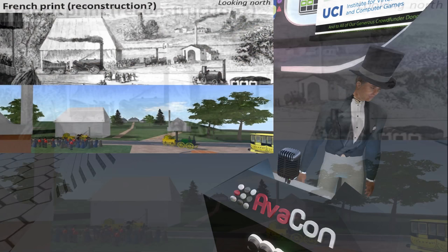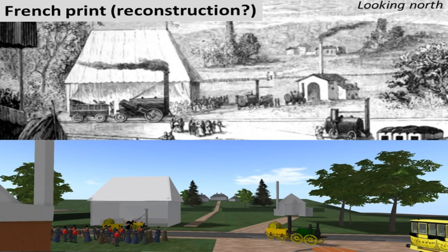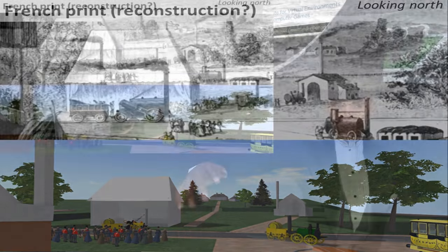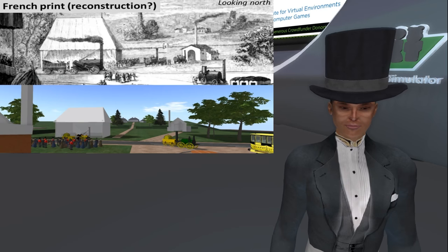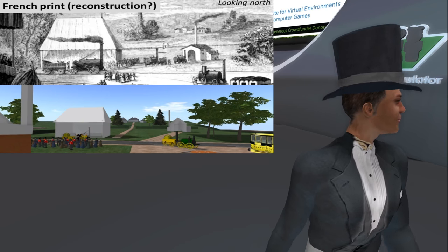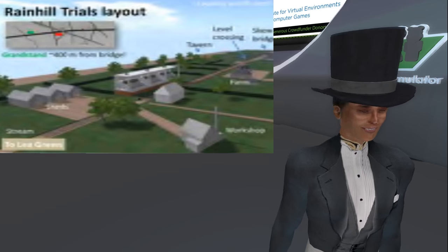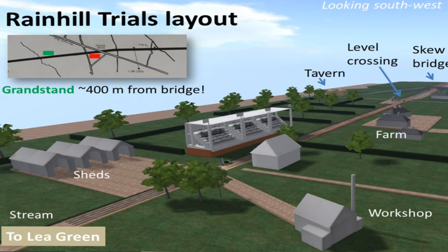There is a second French illustration which is probably also a reconstruction, but is more likely to reflect what is actually happening. Here we're looking north, and the grandstand is immediately to our left. You can see that there is a workshop, a tent for refreshments, as well as the track. And on the next slide, you can see the skew bridge at the extreme right, and on the left the sheds and the grandstand, now 400 metres from the bridge. So you can see that the French illustration, likely a reconstruction, fits much better with what we know about the location of all the elements.